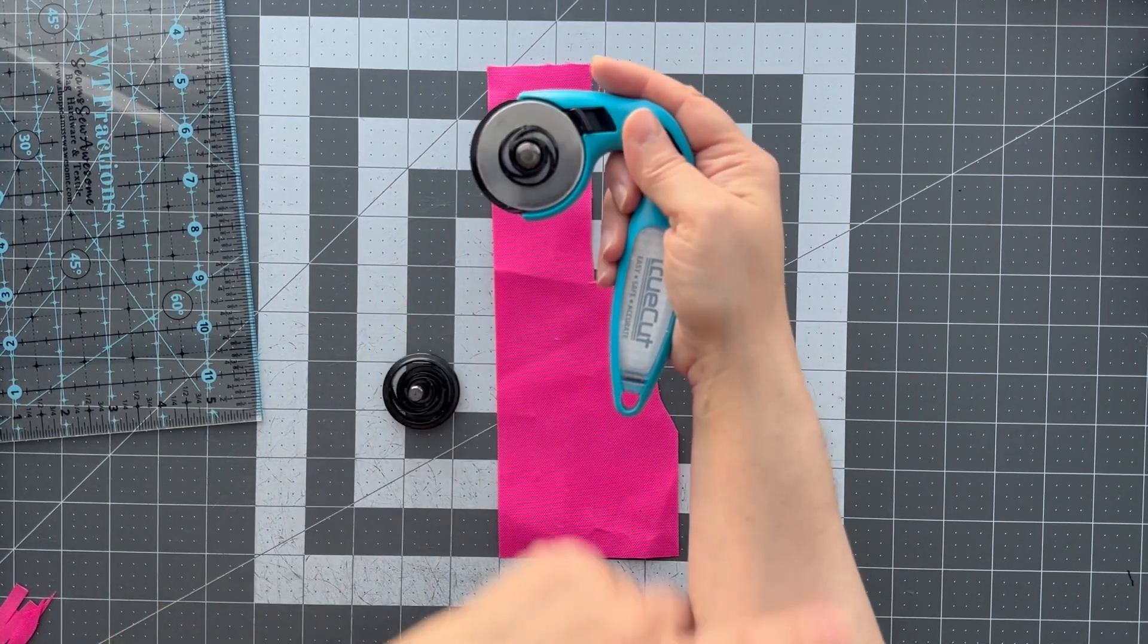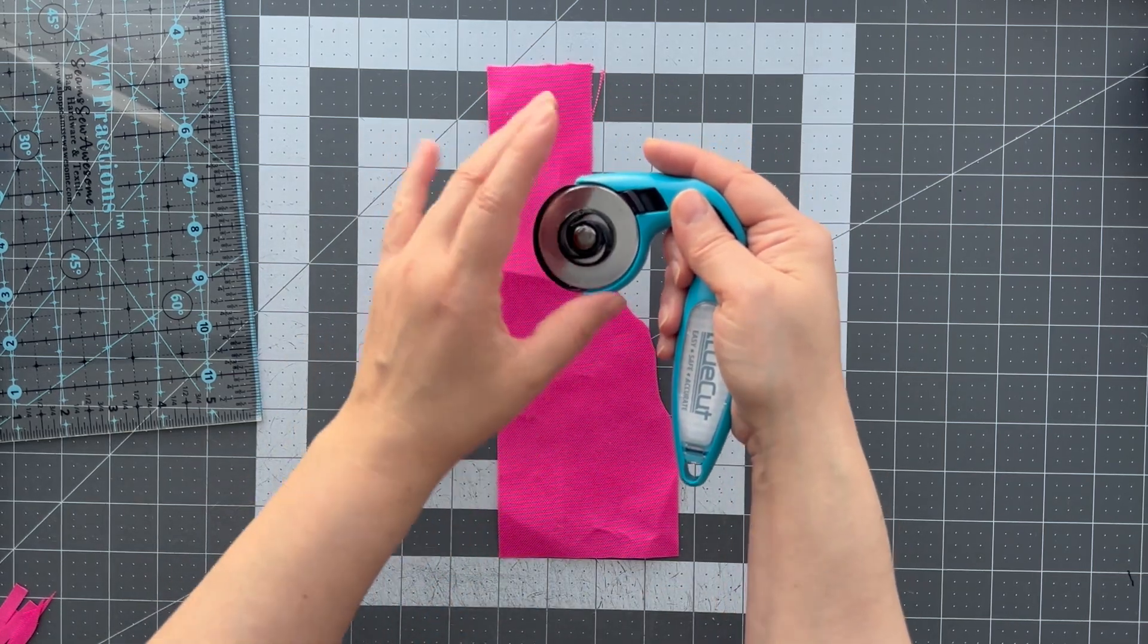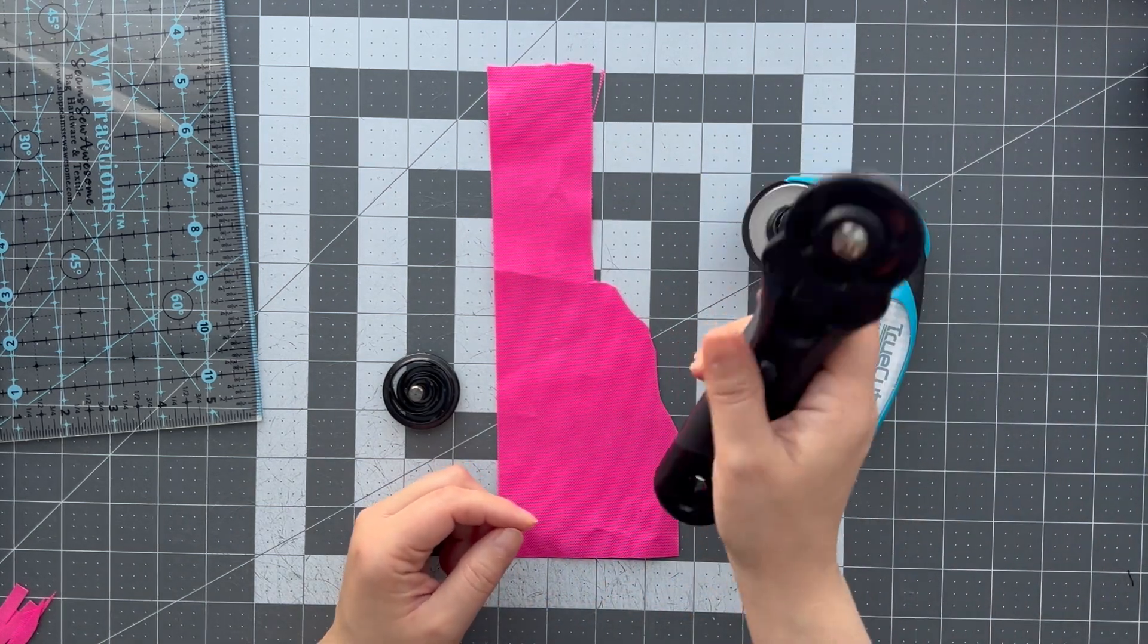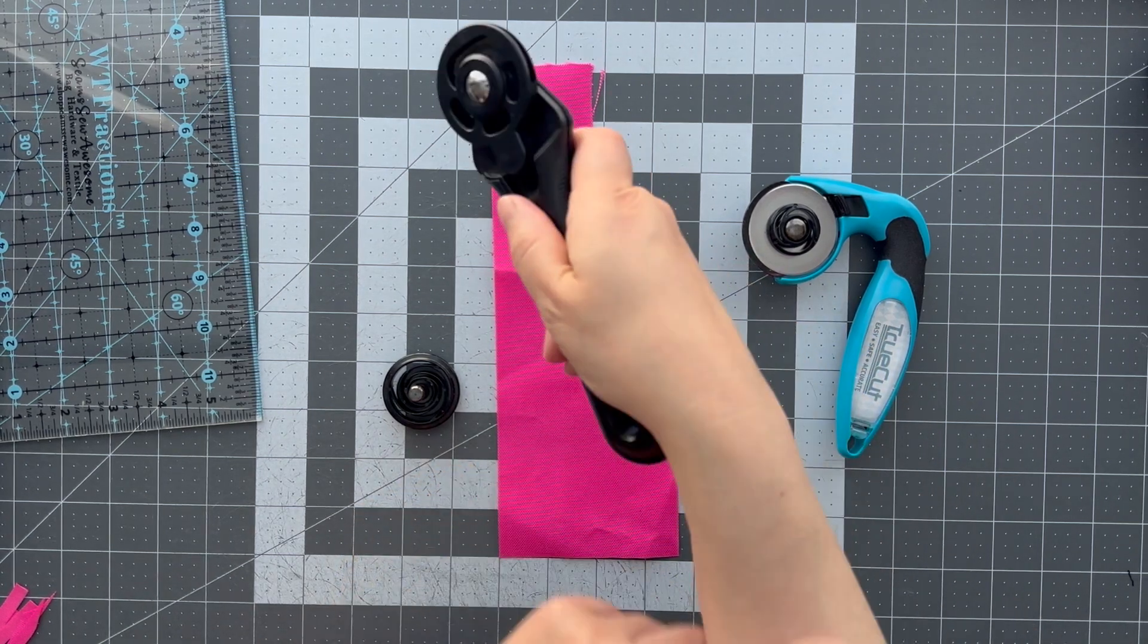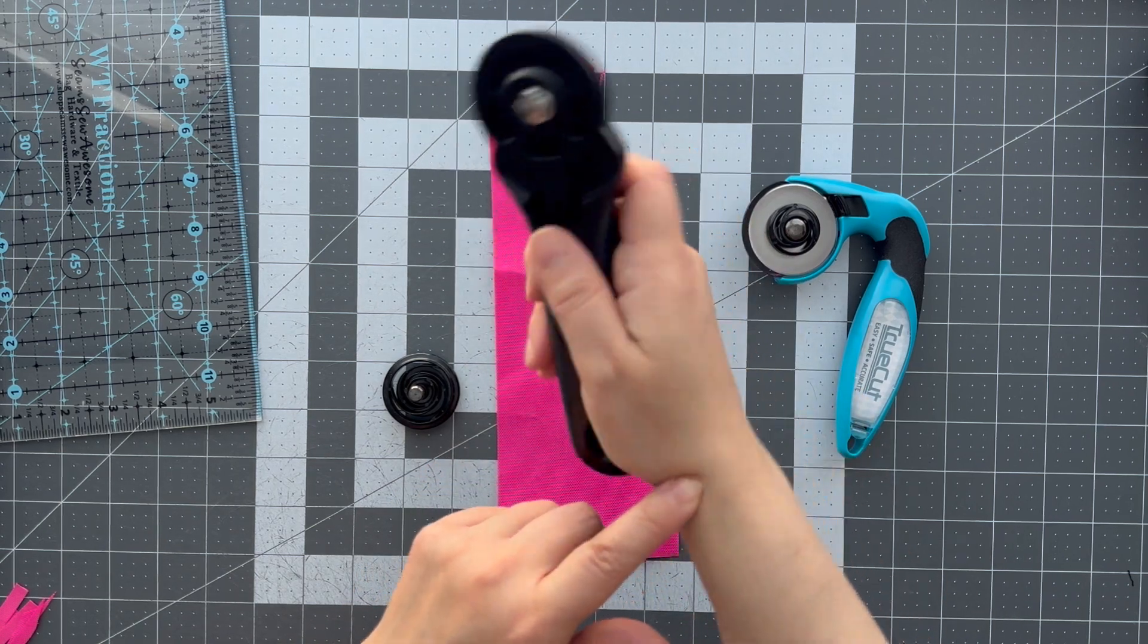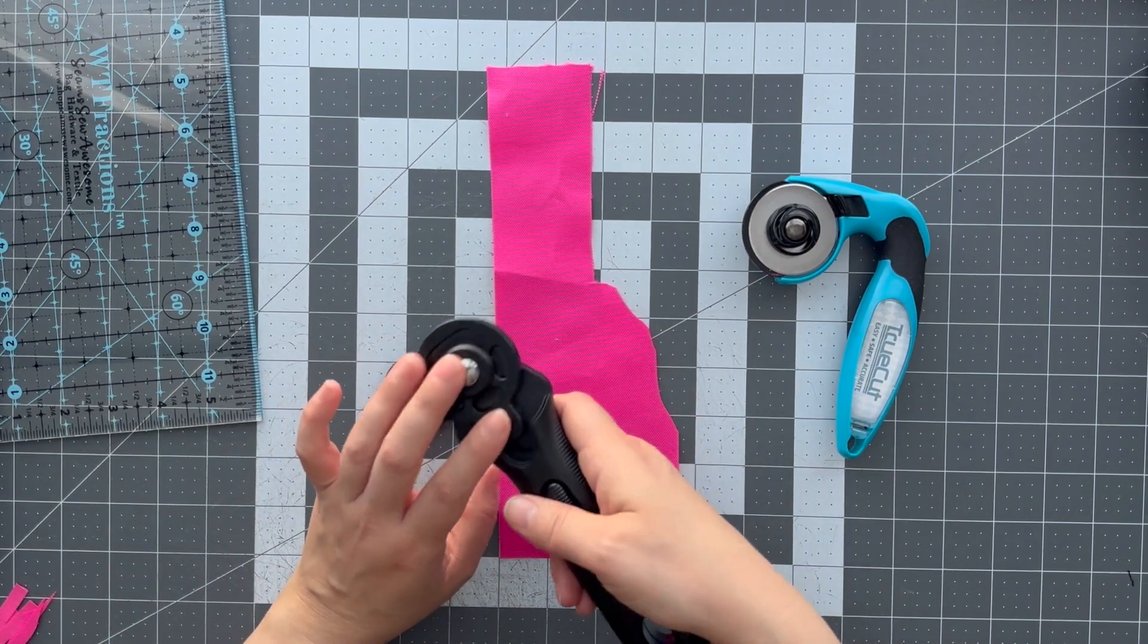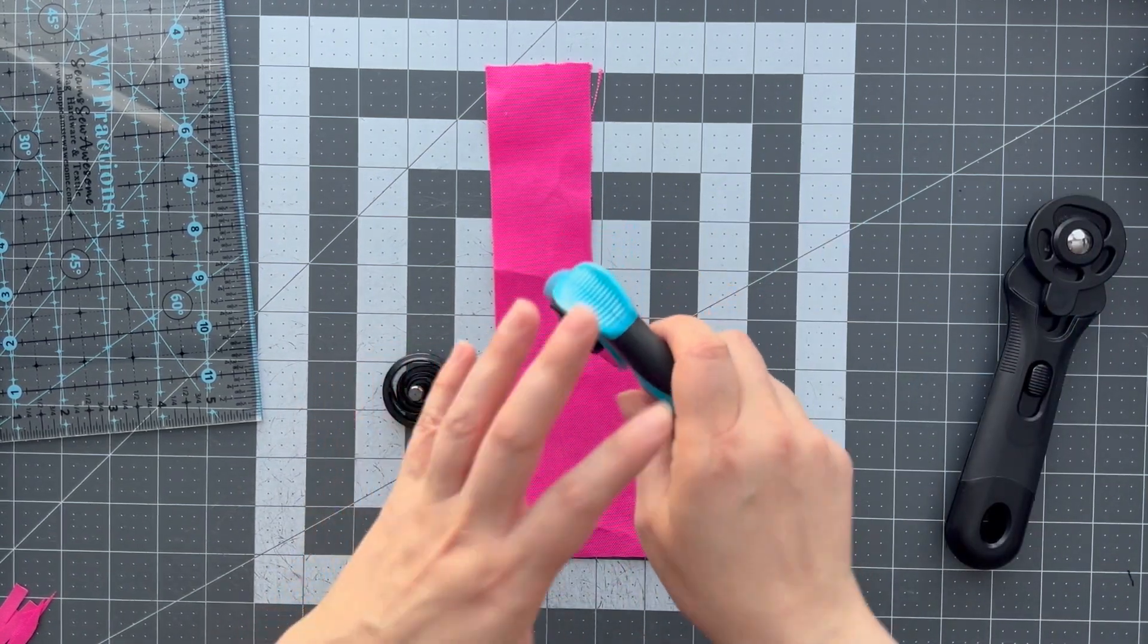I really think it's going to save my hands because if you see the way that you would hold this, you're holding it where it's pretty level and straight when you're cutting. You're not having to bend your arm. You're leaving it pretty much like this when you're cutting because the blade is coming down from your hand. You're not having to bend anything.